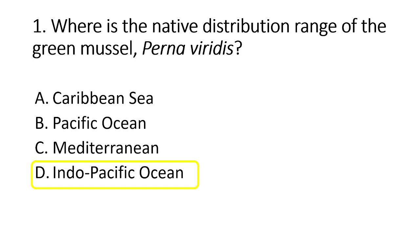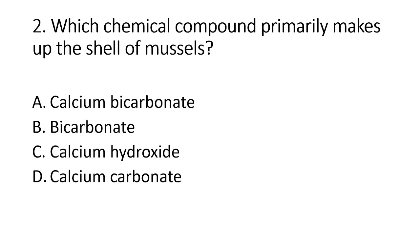Number 2. Which chemical compound primarily makes up the shell of mussels? A. Calcium bicarbonate. B. Bicarbonate. C. Calcium hydroxide. D. Calcium carbonate. The answer is letter D, calcium carbonate.